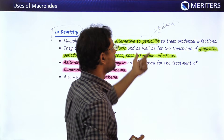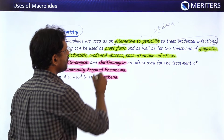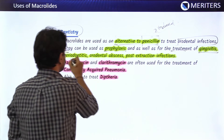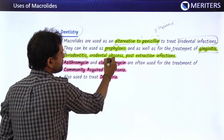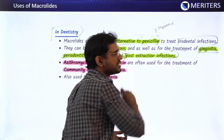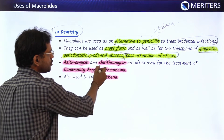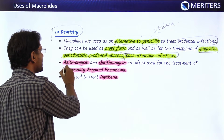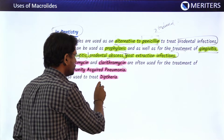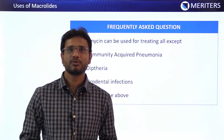Macrolides are used as an alternative to penicillin to treat orodental infections. They can be used both as prophylaxis and for treatment of gingivitis, periodontitis, abscesses — including orodental abscess — and post-extraction infections. Azithromycin and clarithromycin can also be used for community-acquired pneumonia and for treating diphtheria.